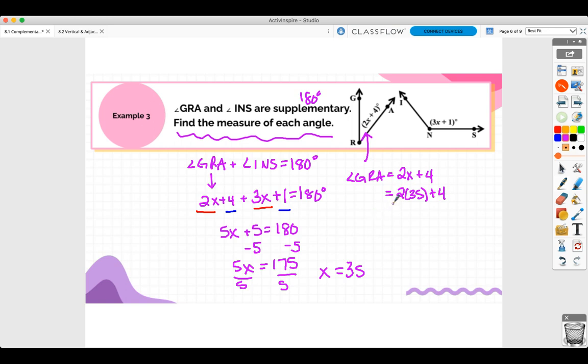So you have to go back and substitute that 35 in for X to get your answer. So 2 times 35 is 70 plus 4. So angle GRA is 74. Now to find angle INS, you can go about it two ways. You could also substitute X in there. Or I like this one. I like to subtract this angle from that. We know they're supplementary. They add up to 180. So you can just subtract these two and get your answer. 106. So angle INS is equal to 106.